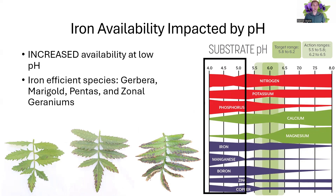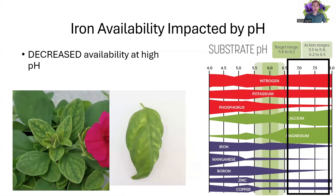Iron-efficient crops such as gerbera, marigold, pentas, and zonal geraniums — on that lower foliage, like we're looking at here, you start to see that iron bronzing occurring. It's going to occur in that lower one-third of the plant; it's where you'll see your problems. But on the other end of the spectrum, when we get high pH above 6.5, we see a drop in iron availability. So we start to see iron chlorosis of that upper foliage — it's only going to occur in that new growth. Looking at this petunia here, we see that the lower foliage is nice and green and healthy. We're only seeing that chlorosis in the new growth, suggesting iron problems.